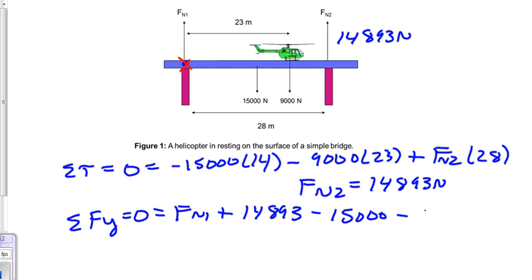And minus 9,000 because that's also downwards. All that equals zero. So we can find force normal 1's value. Force normal 1 is 9,107 newtons.